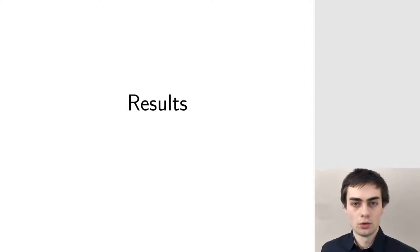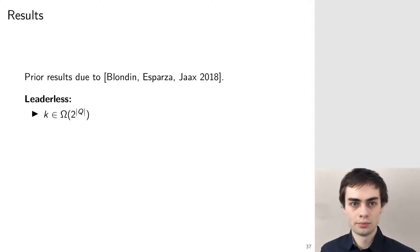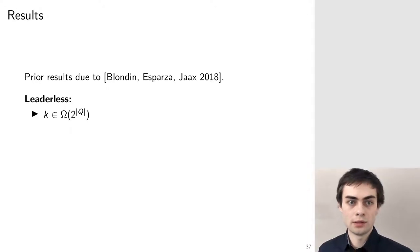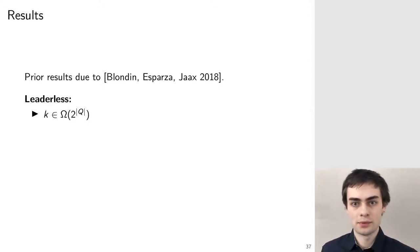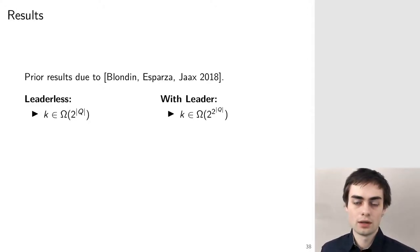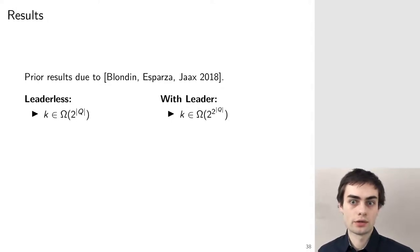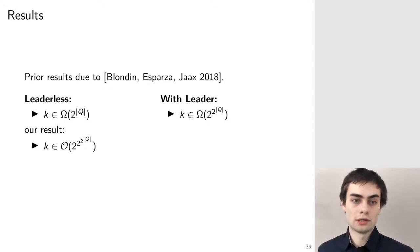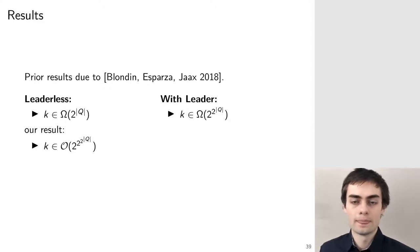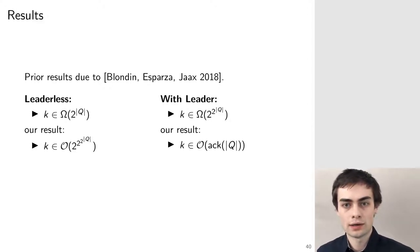Now let's talk about results. There are two prior results due to Blodin, Espasa, and Jax. They show that for leaderless population protocols the thresholds are at least exponential — they exhibit a family of protocols deciding exponential thresholds. Perhaps surprisingly, for protocols with a leader they show you can even decide doubly exponential thresholds. Our result is that for leaderless population protocols you can decide at most triply exponential thresholds, and we also have a weaker upper bound for the case with leaders.